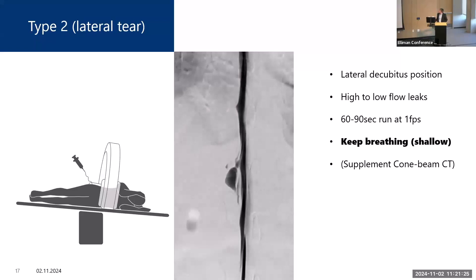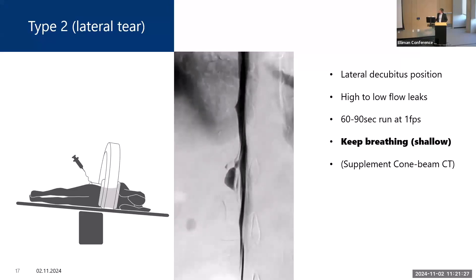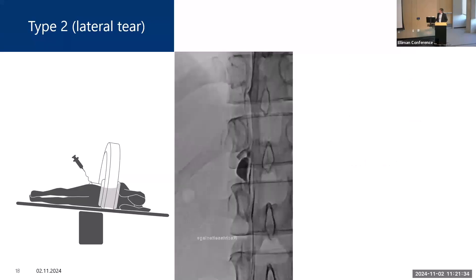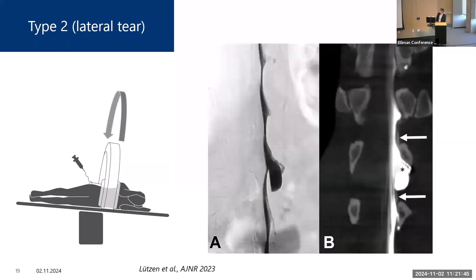In this example you can see an arachnoid herniation through a lateral dural tear that fills, with the leak appearing as epidural contrast in the epidural space. Sometimes it is not possible to demonstrate the leak — in one patient we missed it with DSM, and after 60 seconds we performed cone beam CT and saw a very subtle leak.